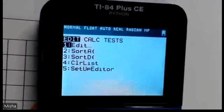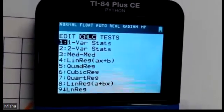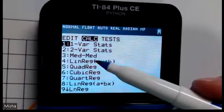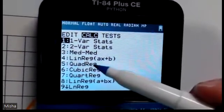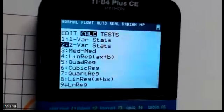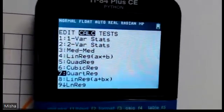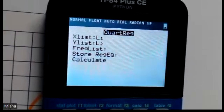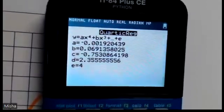Then we go back to stat, go to calc. Now number seven here, if you look here, we have a line, we have a quadratic, we have a cubic, and this is a quartic number seven. So we go down here, select that one. And then if you just hit enter multiple times. There it is.